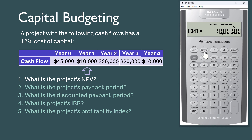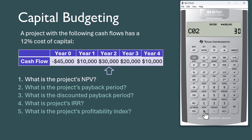Press Enter, then scroll down. FO1 is the frequency of the first cash flow amount — leave it at the default of 1 and scroll down. CO2 is the year 2 cash flow, which is 30,000. Press Enter, then scroll down.